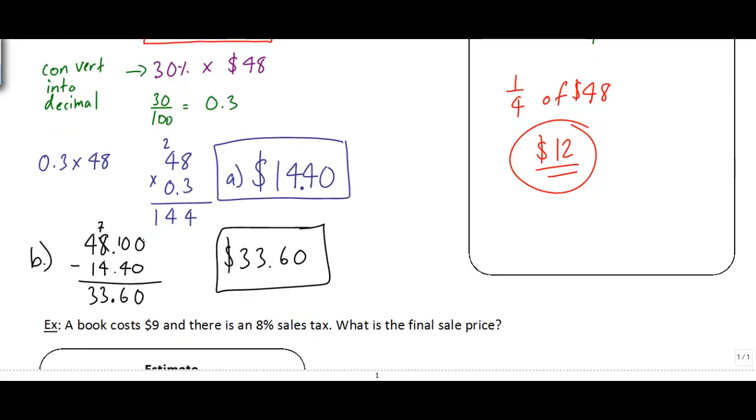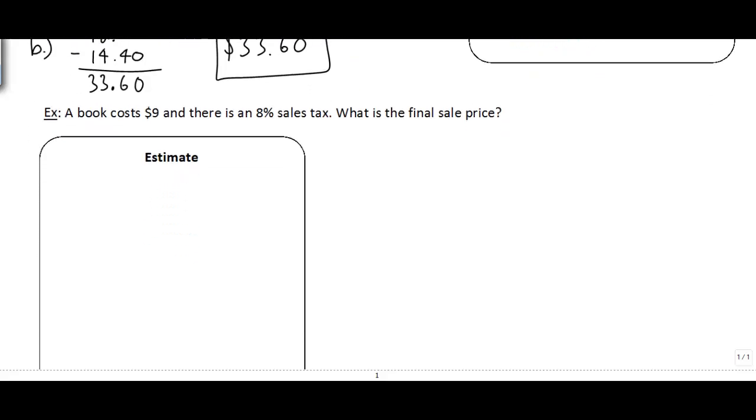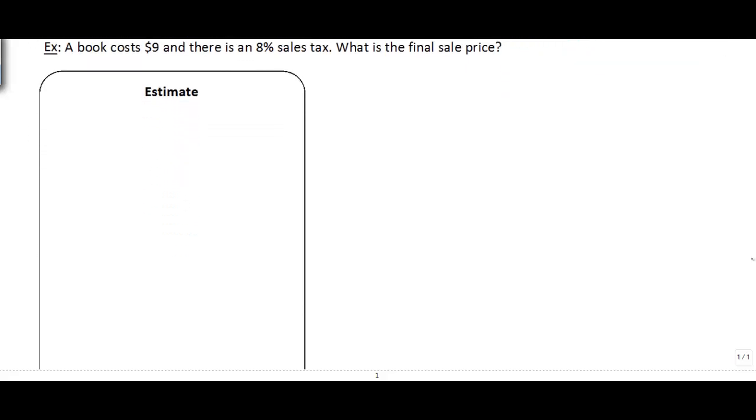Okay. Next question. A book costs $9 and there's an 8% sales tax. What is the final sale price? Okay, so first thing I'm going to do here. So a $9 book and 8% sales tax. That basically, what I'm asking is what is 8% of $9. And like we saw before, really that's just saying what's 8% times $9.